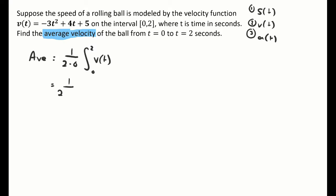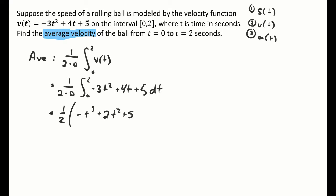Once you know that, you go right to the formula: 1 over b minus a times the integral from a to b of your function. So I have 1/2 times the integral of (-3t² + 4t + 5)dt, which gives 1/2 times [-t³ + 2t² + 5t] evaluated from 0 to 2. Plugging in t = 2: -8 + 8 + 10. Minus everything at 0, which is nothing.